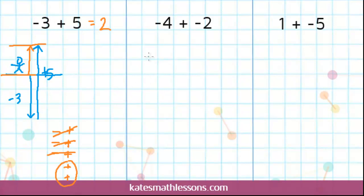Let's look at the next one. This next one, we're adding 2 negatives together. A common mistake that students make is to see 2 negative signs and assume that means the answer is positive — that's when you're multiplying. When you're multiplying 2 negatives together, you get a positive. But when you're adding 2 negatives, that's not the case.